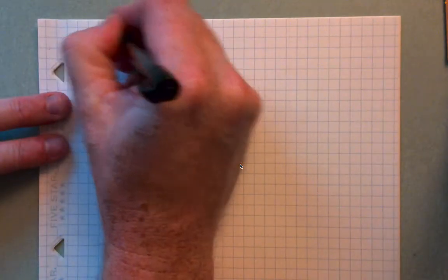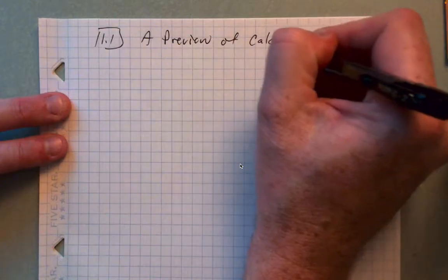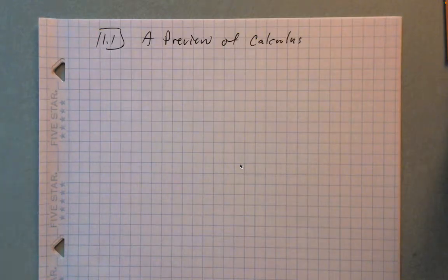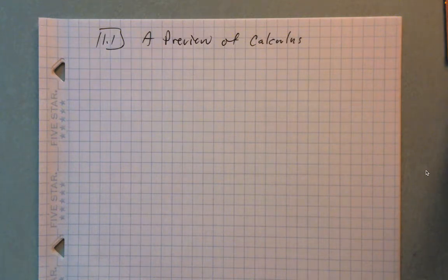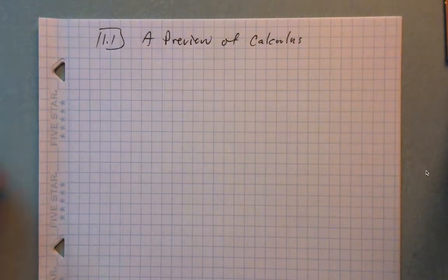I'm going to call this section 1.1: a preview of calculus. There are countless applications of calculus, and its importance really cannot be overstated. No matter what I said, there's no way I can overstate the importance of calculus to the rest of mathematics and science in general. What I want to do is go through a couple of examples of capabilities that calculus enables — just a few of the many, to help motivate what we might expect from Calculus 1.